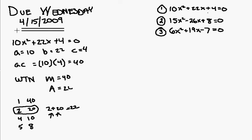We're going to take this equation right here. Now, we're going to take that equation and we're going to rewrite it. So, it becomes 10x squared plus 20x plus 2x plus 4 equals 0.